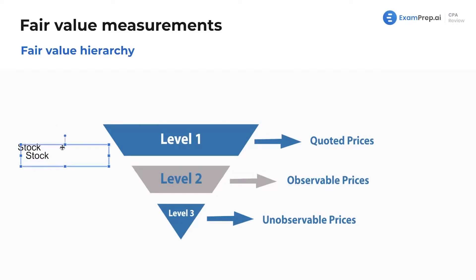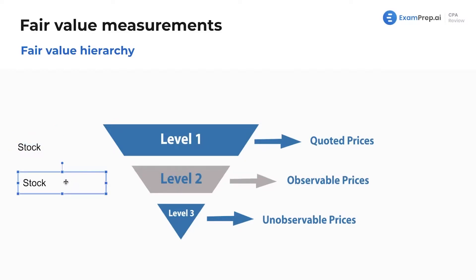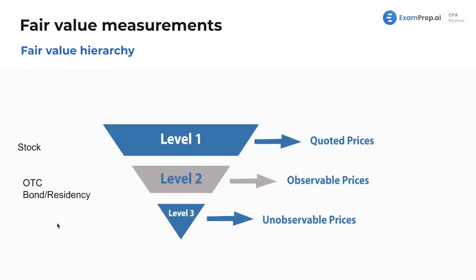Observable prices — let's say this is an over-the-counter bond. What does that mean? We'll talk about that. And lastly, in other terms, maybe a residency — your house.